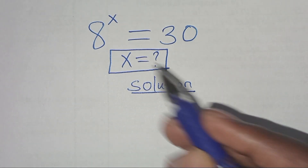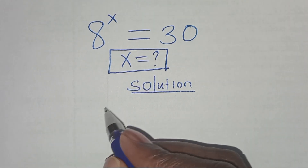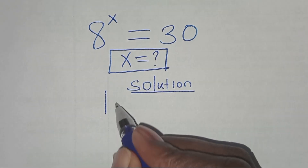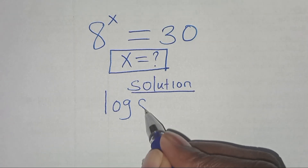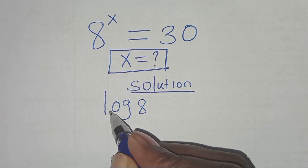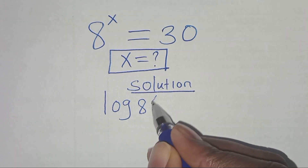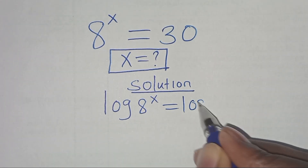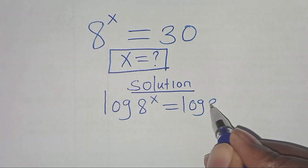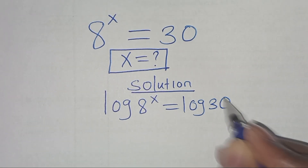Now, to solve for x, we introduce logarithm on both sides, so we'll have log 8 to the power x, this is equal to log 30.